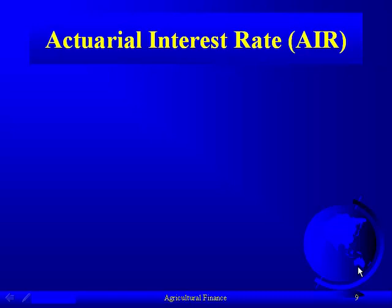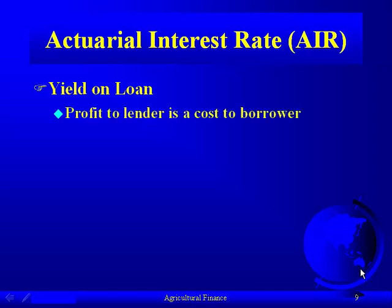What we're leading into now is: you have two different lenders, one with a lower rate but higher costs — how do you figure out which is better? You cannot just look at the contractual rate; you have to find the lowest cost, not just the lowest rate. The actuarial interest rate is the yield on that loan — the rate that makes the present value of cash inflows equal to the present value of cash outflows. What's the cost of the borrower is profit to the lender, so we can think of it in the context of yield.